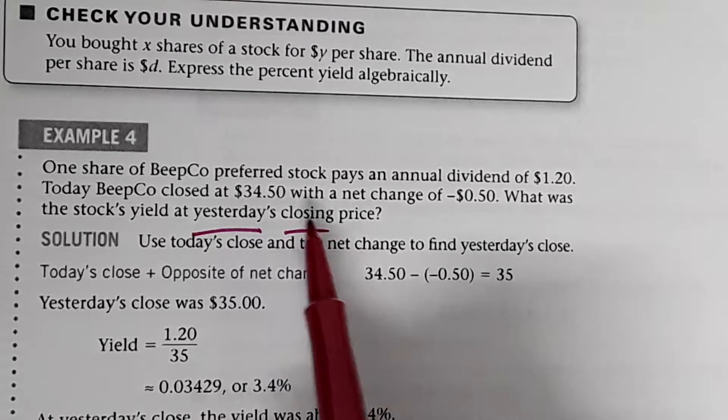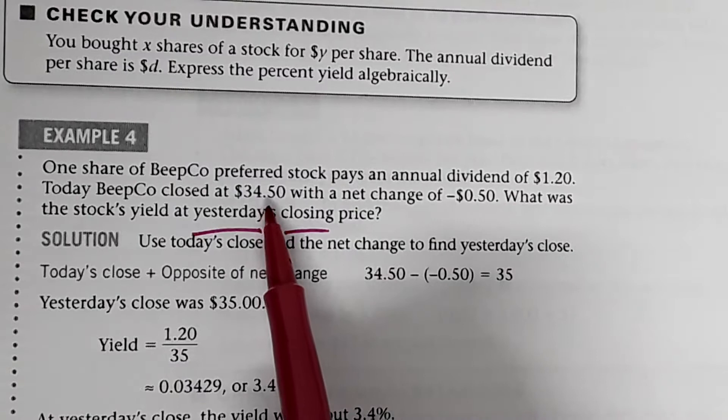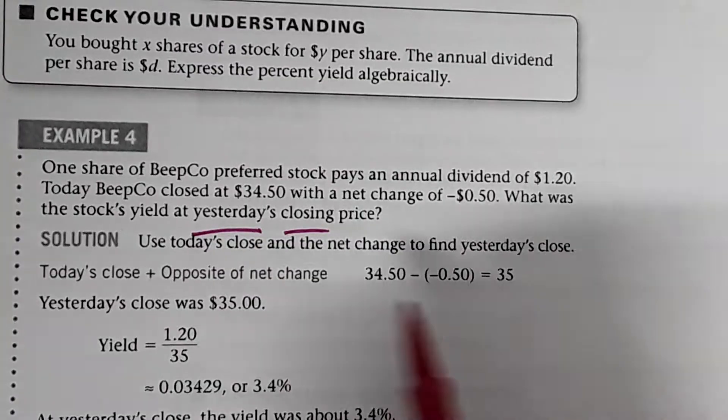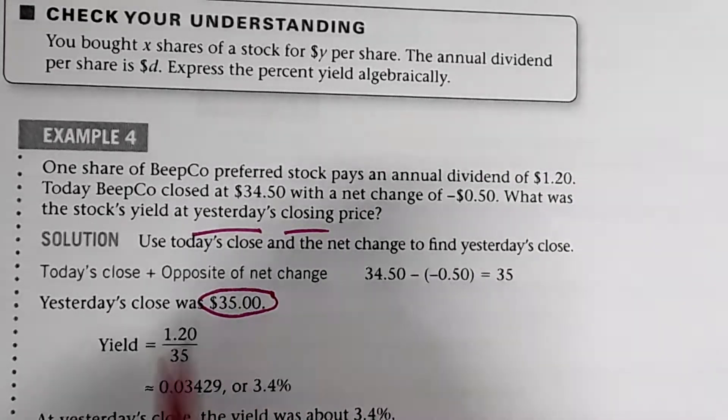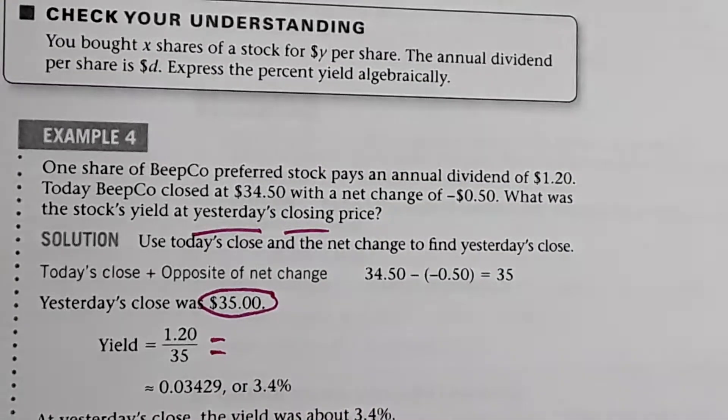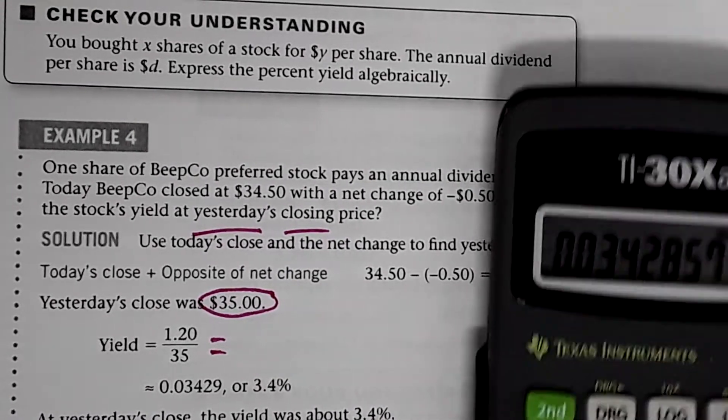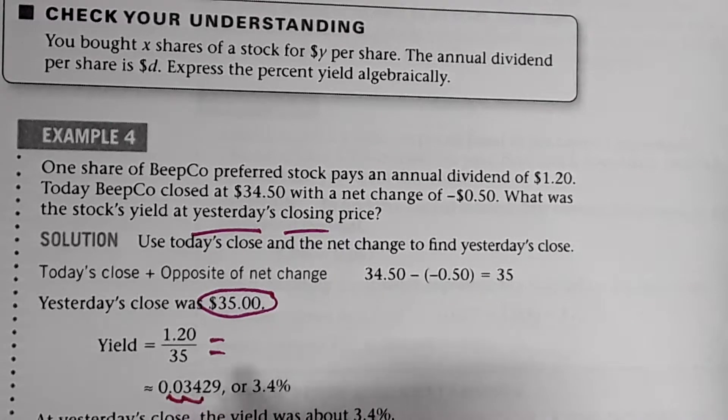What was the yield at yesterday's closing price? Well, yesterday's closing price would be this, but it went down $0.50. So it's that plus $0.50, which would be $35. So $34.50 plus the $0.50 would be $35. So yesterday's close was $35. So that's the number I'll use in the denominator. So the yield, $1.20 divided by $35, yesterday's closing, is 0.03429. Right there. Move the decimal two places. So right there between the three and the four. 3.4%. That was the yield yesterday.